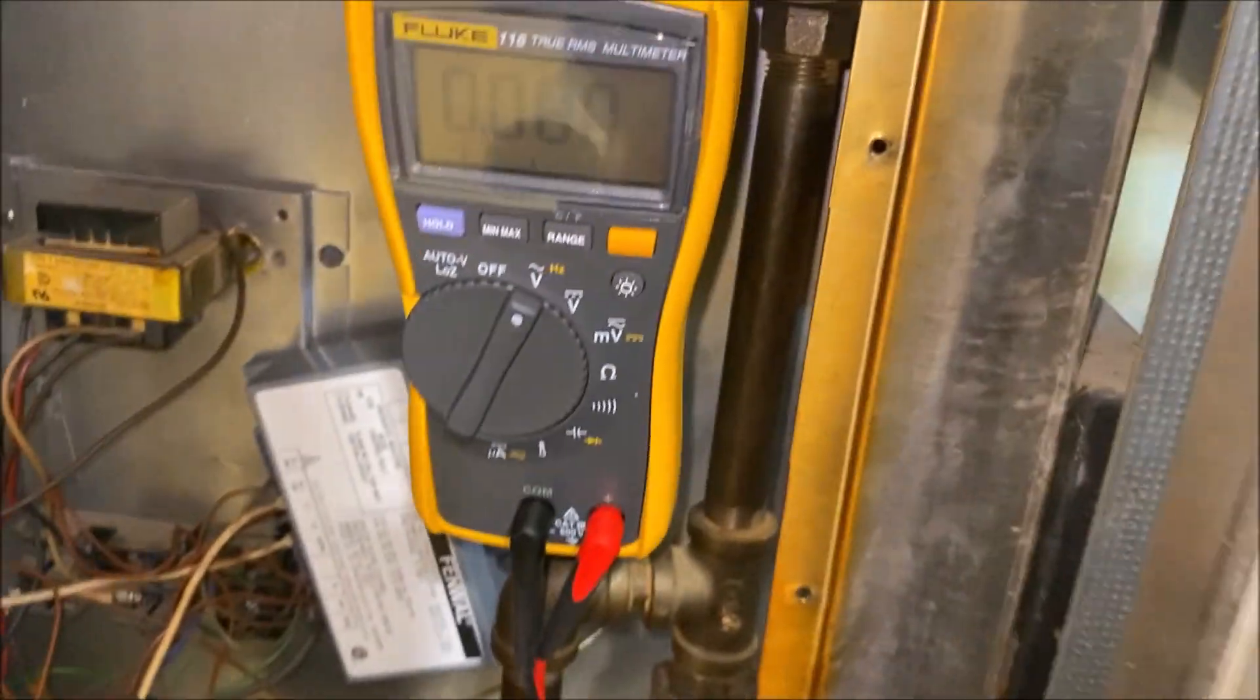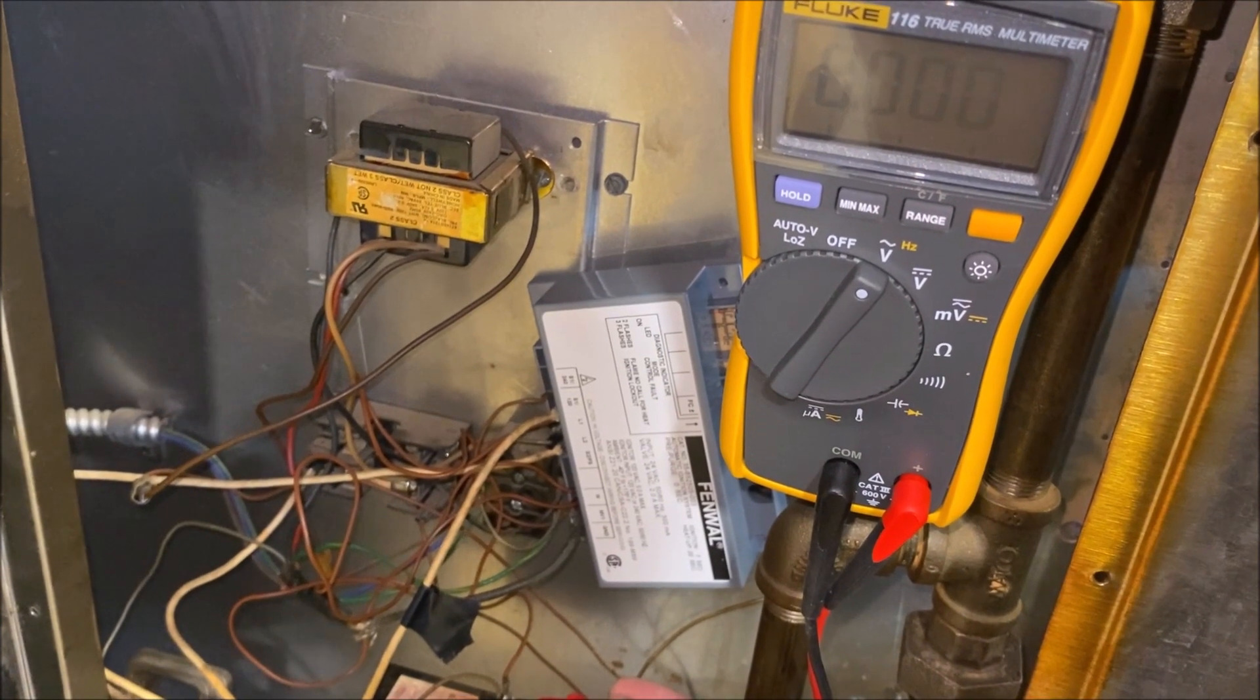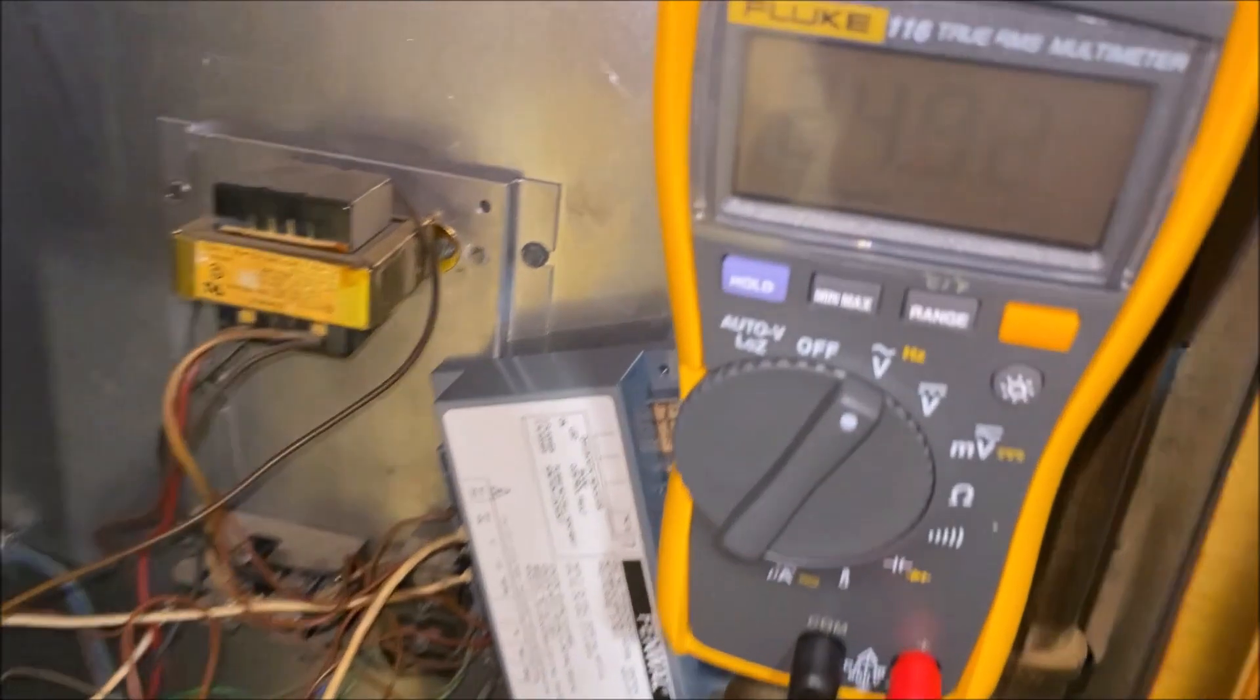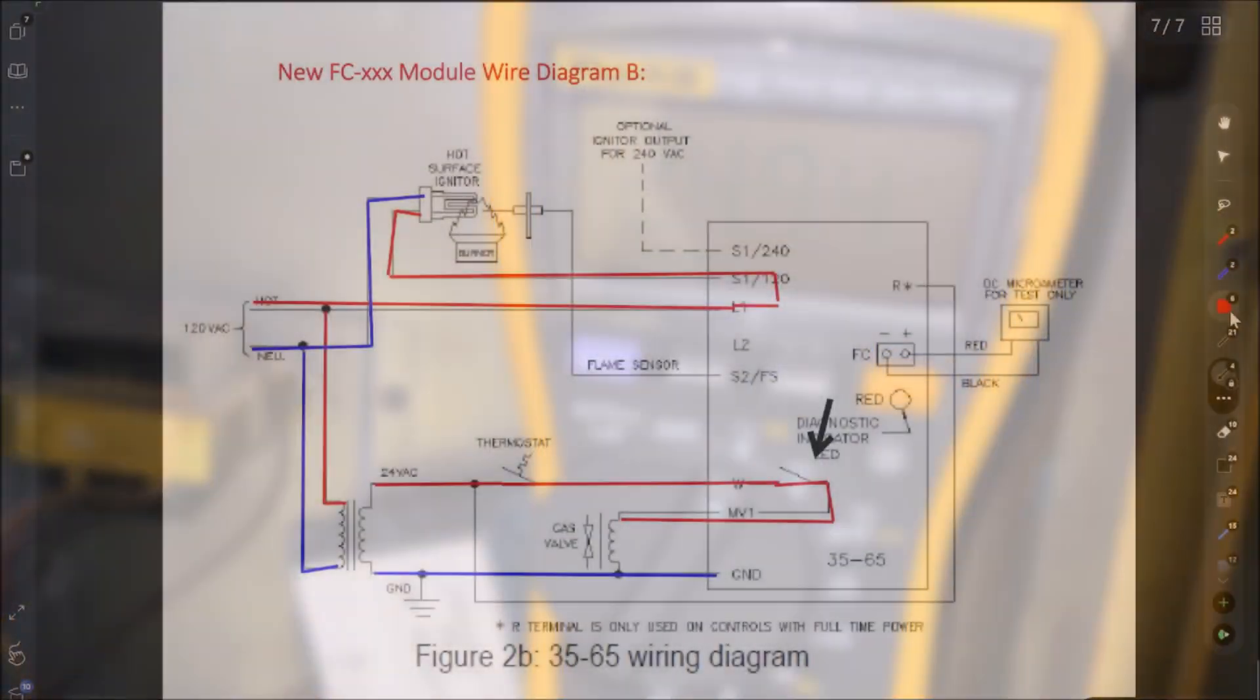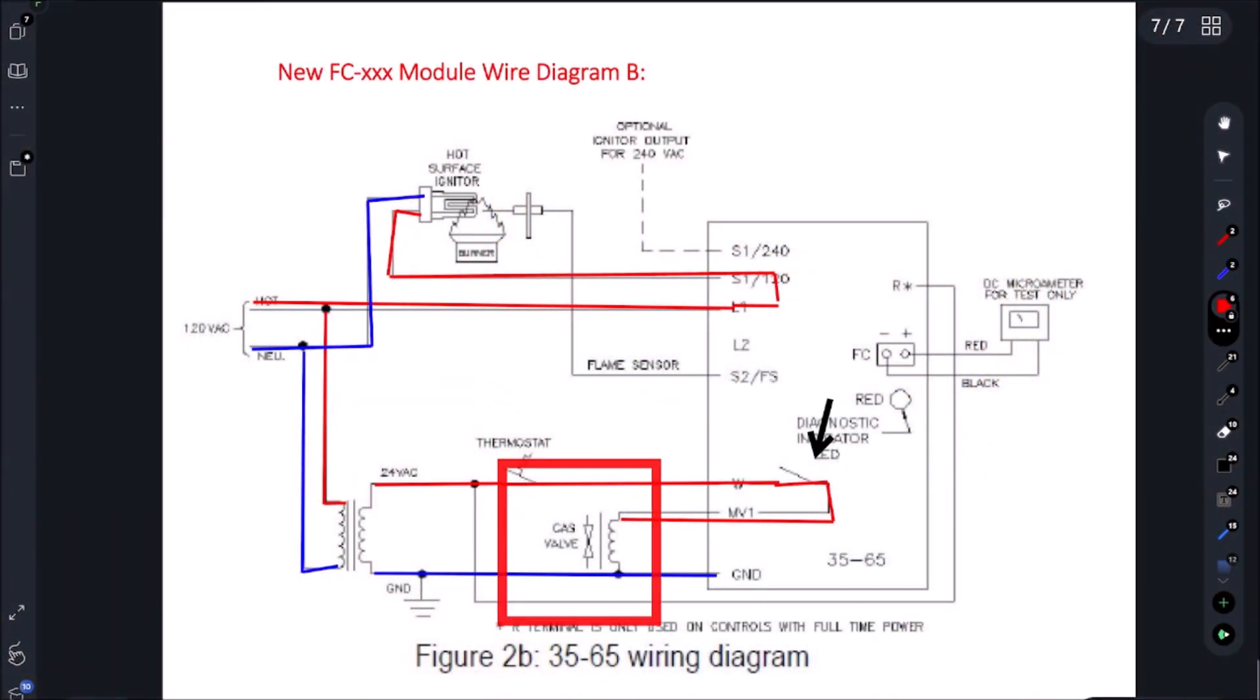Let's go test this gas valve. We are getting 24 volts. Unbelievable, the gas valve is bad as well. We tested voltage at the gas valve and we were getting 24 volts, so that means this switch here is closing. So that means we have a bad gas valve as well.